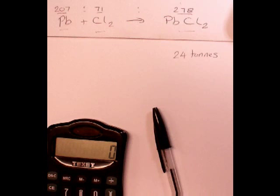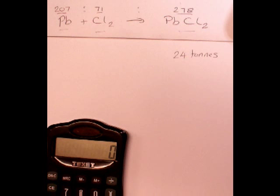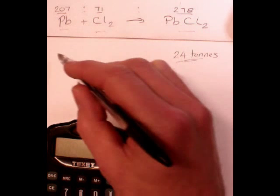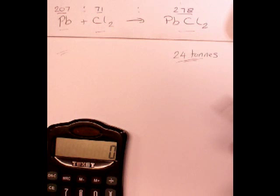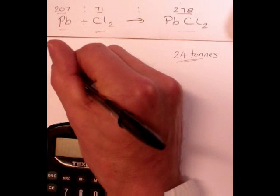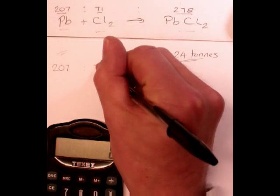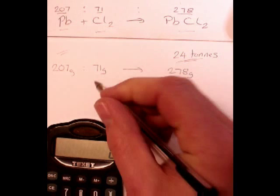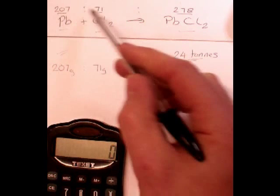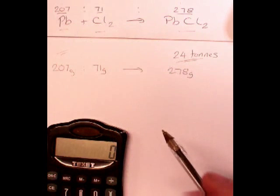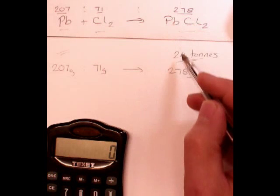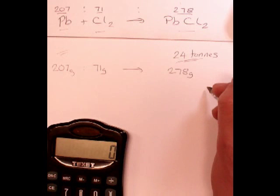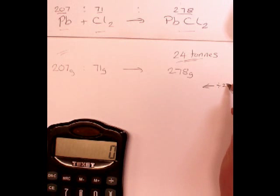This question is similar to expected yield, except that this time I've got the amount of product and I've got to work backwards. So, I want to know how much lead I need to produce 24 tons. It doesn't matter what the units is. It's just a number. So, the same procedure as before. So, I know the ratio is 207 to 71 grams and that will give me 278 grams. And I know that, again, stressing the point, because I used the formula mass for the balanced equation. So, this time I'm working on this value here, 24 tons. So, my first line is going to be divide everything by 278.